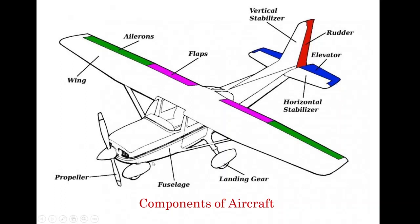In the figure, we can identify the propeller, the fuselage, the gear system, and the wings. There are also ailerons, flaps, stabilizers — including the horizontal stabilizer and vertical stabilizer — as well as the elevator and the rudder.